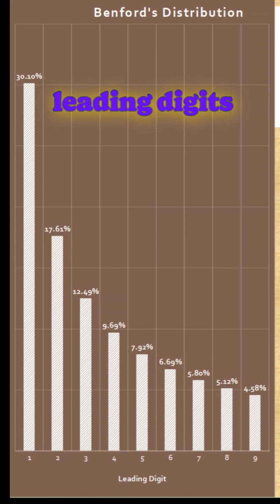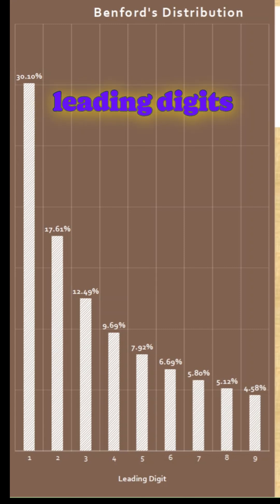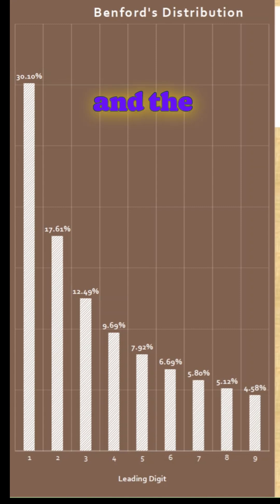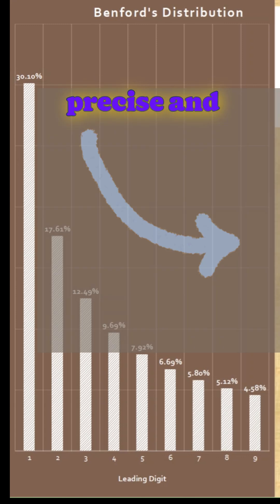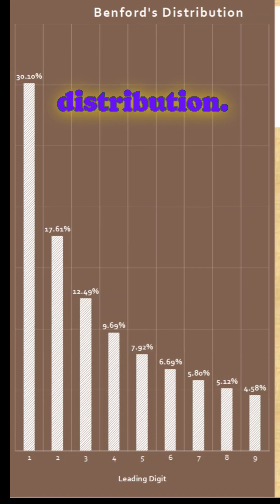In a naturally occurring, real-world, Benford-compliant dataset, the smaller leading digits like 1, 2, 3 are more frequent than the higher digits like 7, 8, or 9. The leading digits follow a precise and consistent pattern. This is called Benford's distribution.